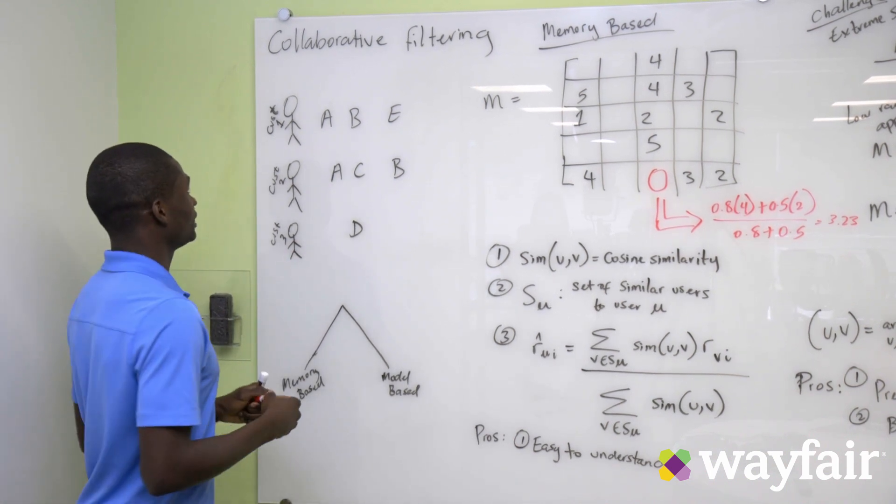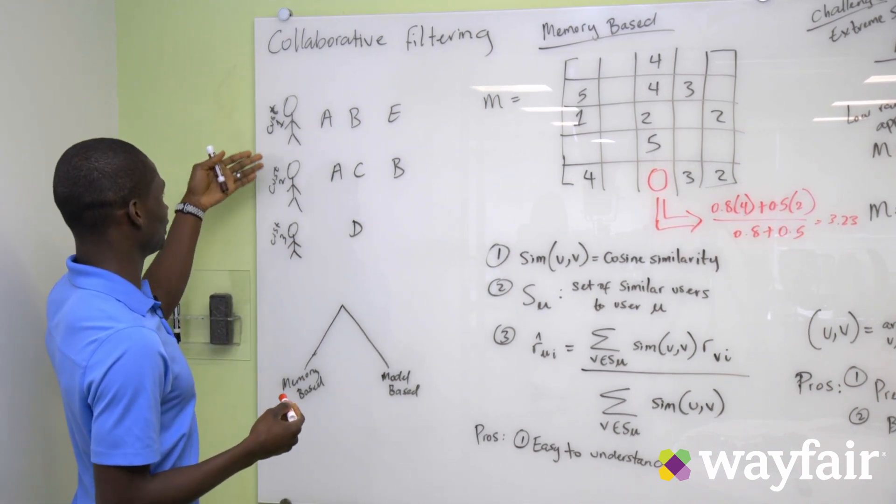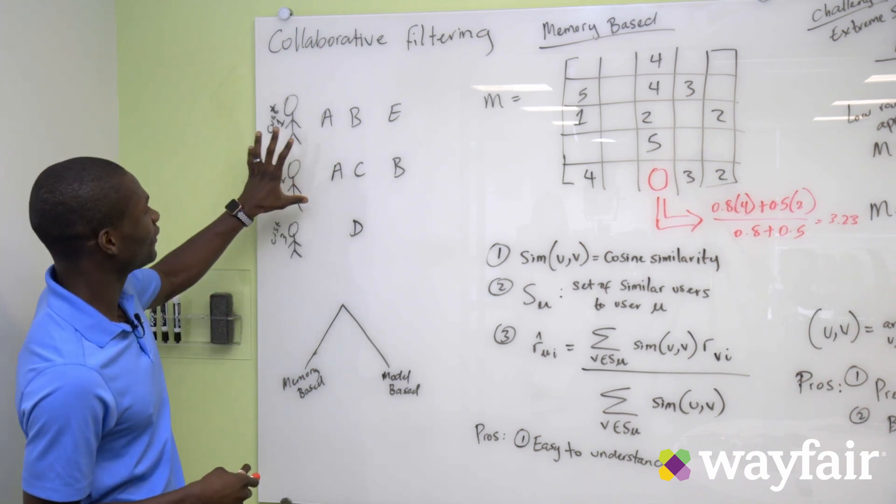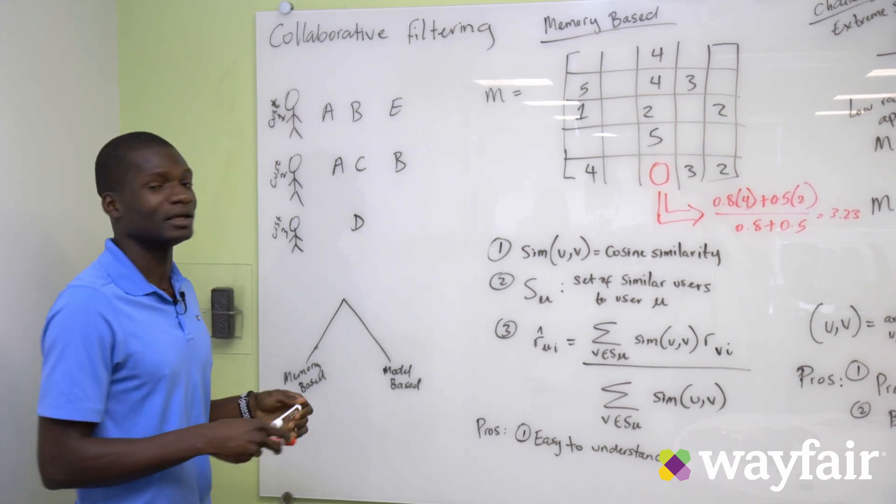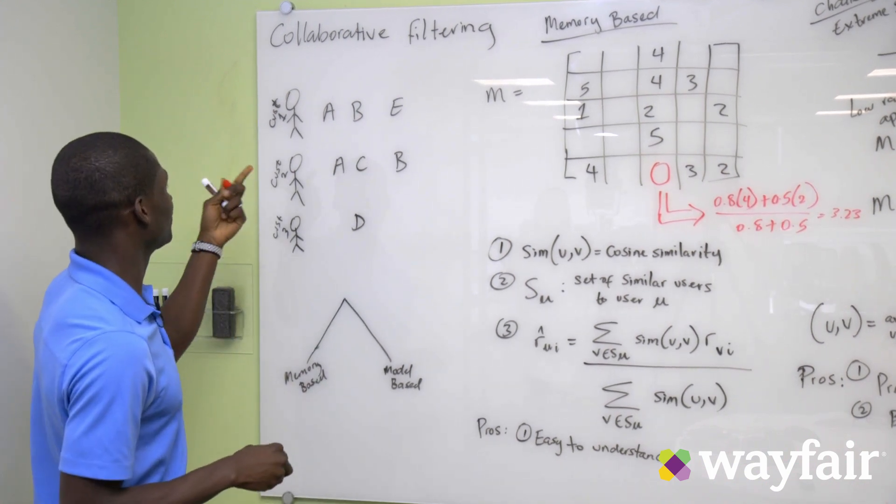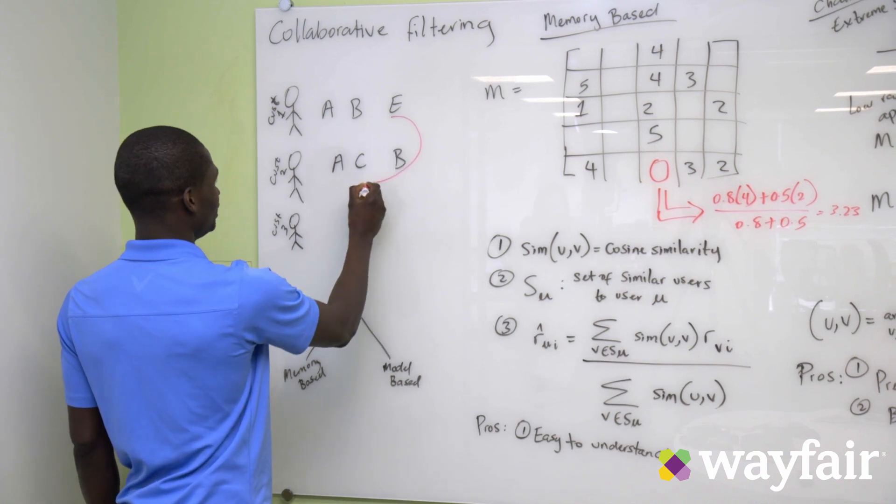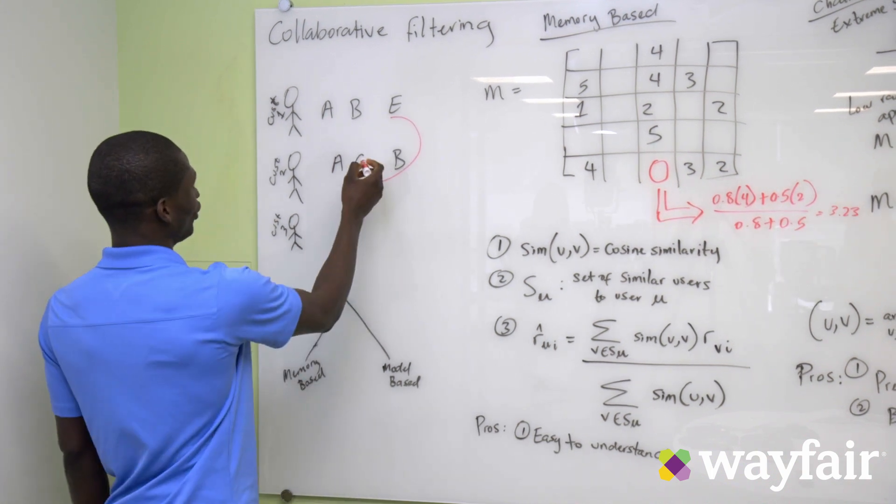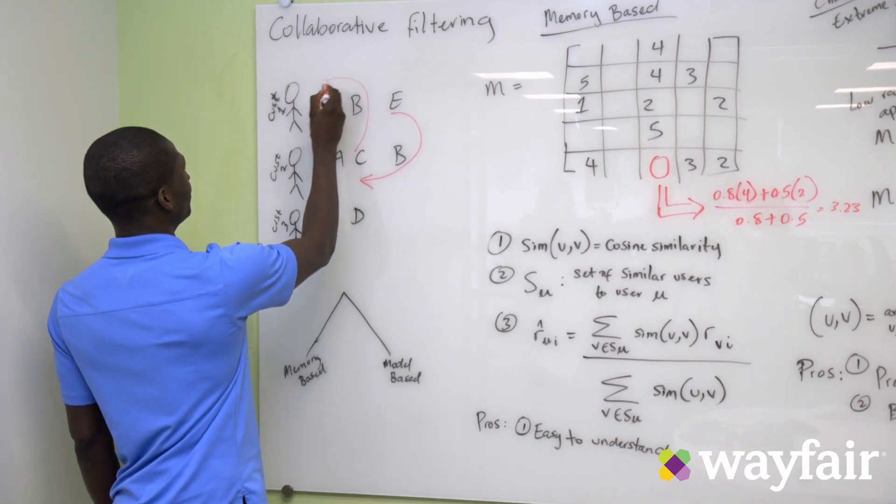And if we want to make a recommendation for customer 1 and 2, we can see that they are actually very similar to each other in the products that they have bought and so we can recommend a new product to customer 2E and then we can show product C to customer 1.